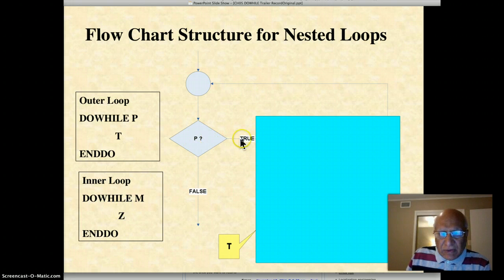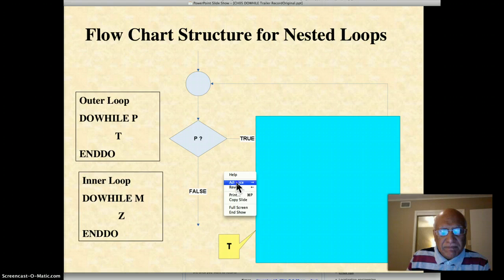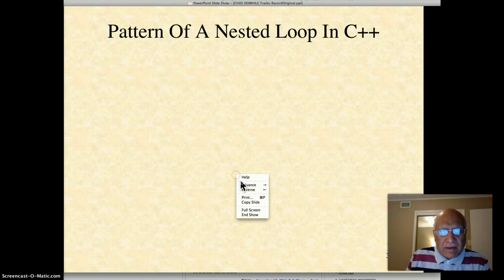When the outer loop condition is true, it does a whole bunch of things in this blue box, and the blue box will contain an inner loop which will test another condition and do some other tasks Z.